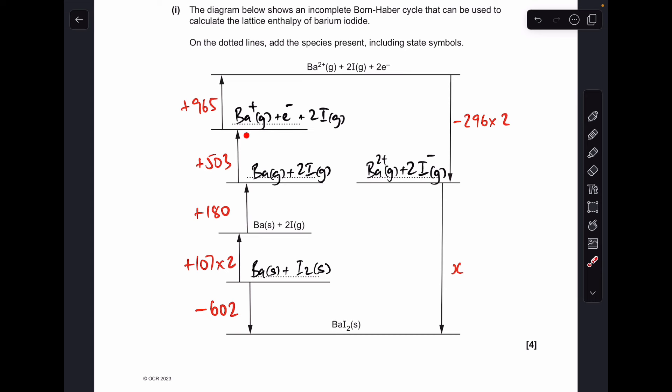Next is the first ionization energy of barium, then the second ionization energy of barium. This one here, remember, is the electron affinity for iodine, but because there's two moles of it, we double that. And there's the lattice enthalpy, so we're calling that X for the purpose of the calculation.